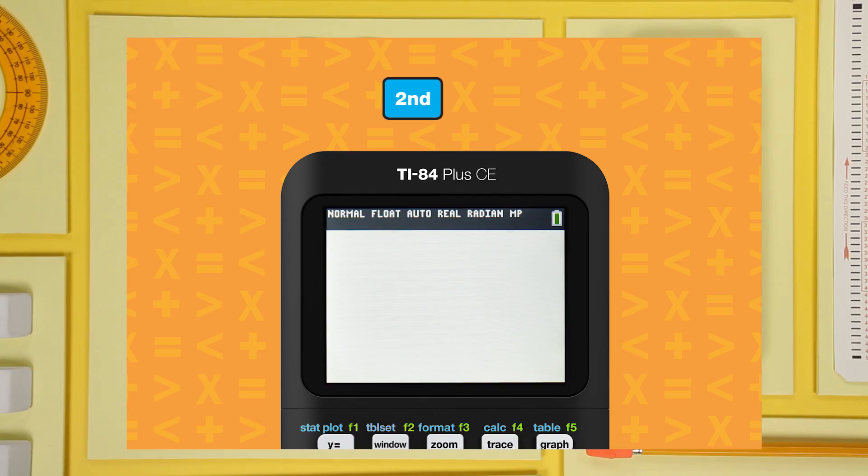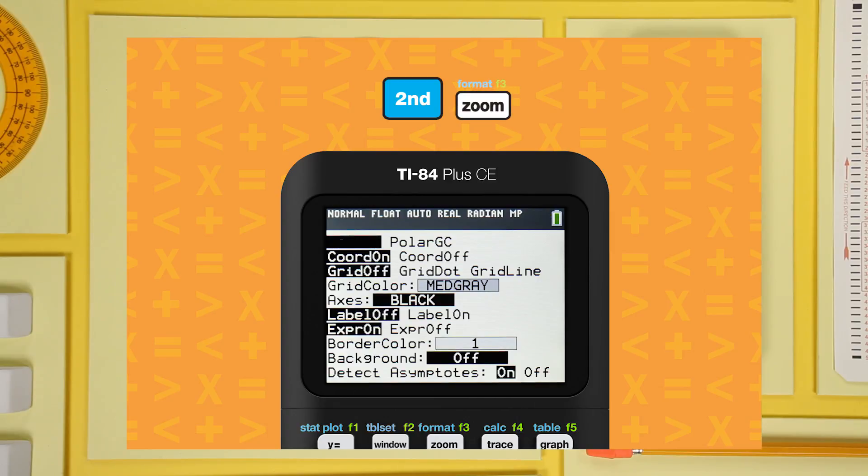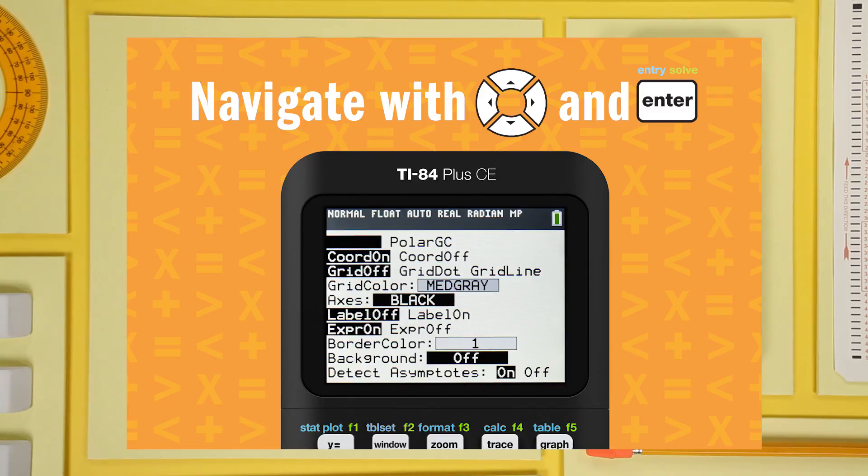Press the second key to activate the blue commands over the keys. Then press format, the blue command over the zoom key. Your settings should look like this. If you have to fix something, arrow to the correct setting and press enter. This is important. These settings make it a lot easier to read your graphs.